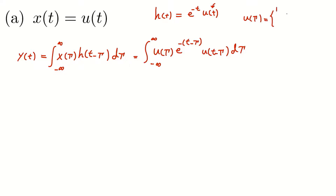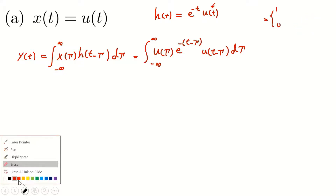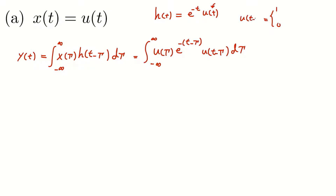For a unit step function, u(τ) is 1 if τ is greater than or equal to zero, and 0 if τ is less than zero. More generally, u(t - τ) is 1 if t - τ is greater than zero, meaning τ is less than or equal to t, and u(t - τ) is 0 if τ is larger than t.